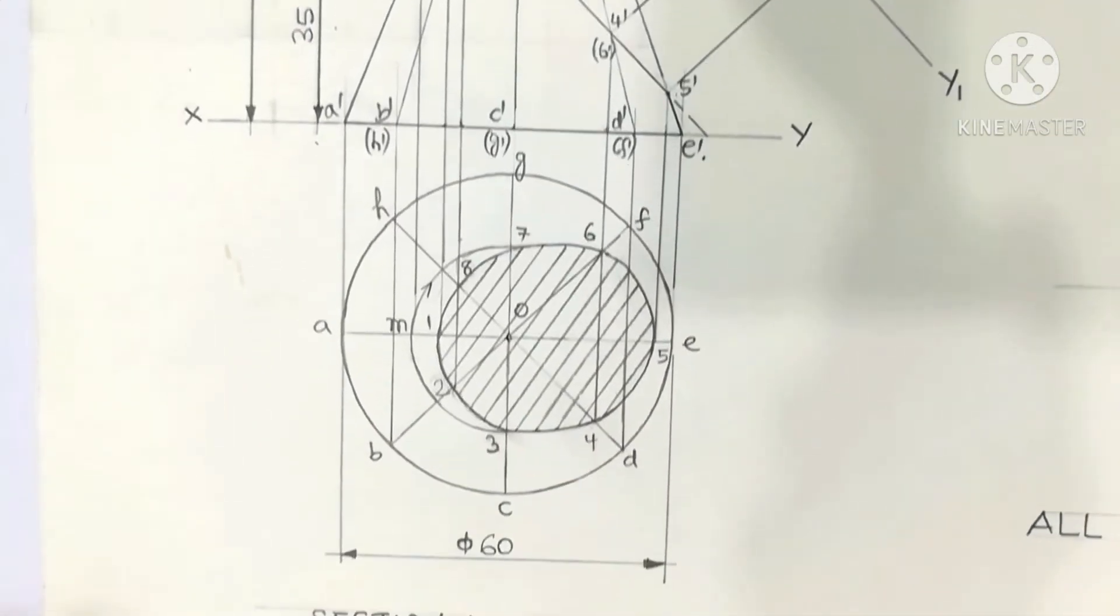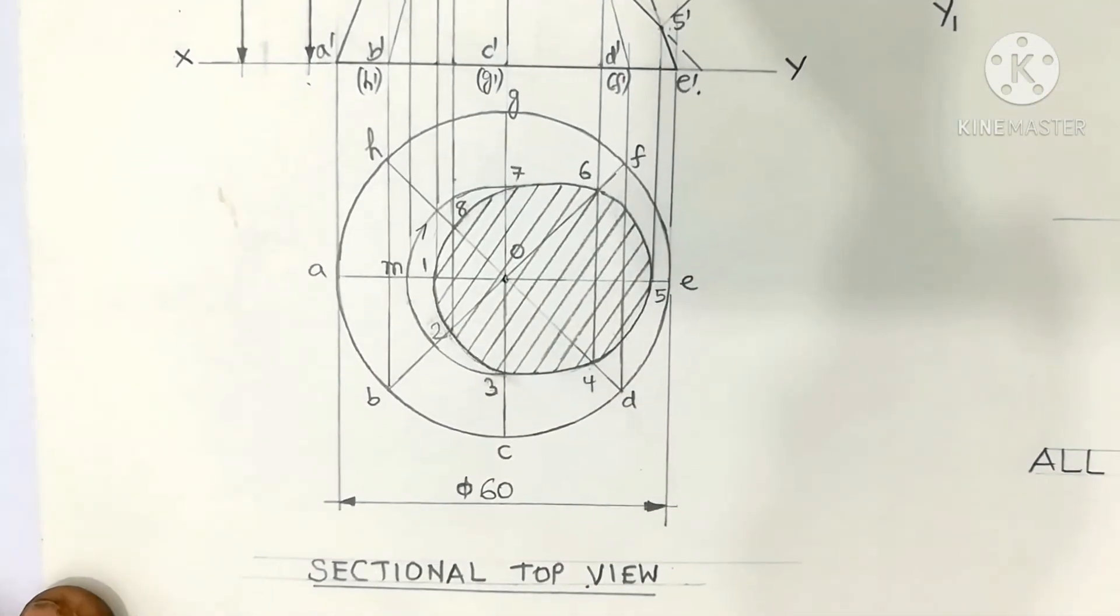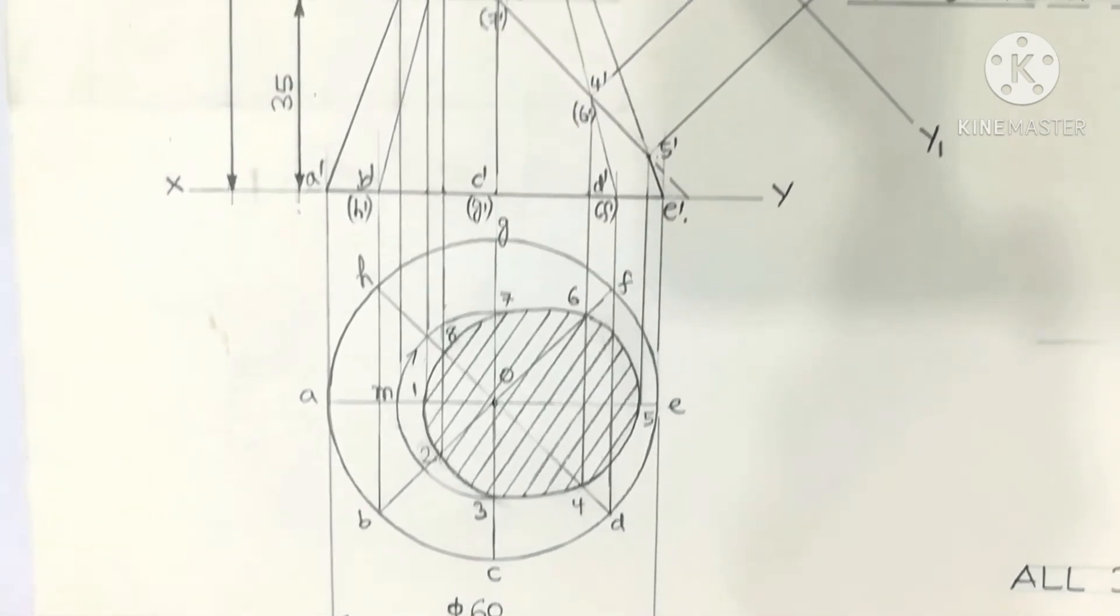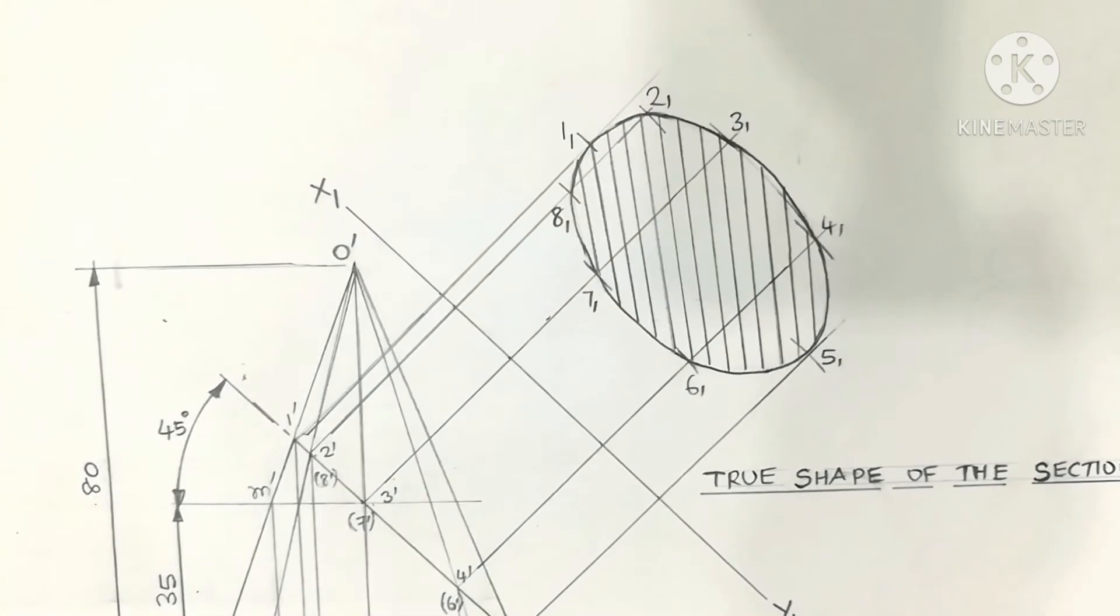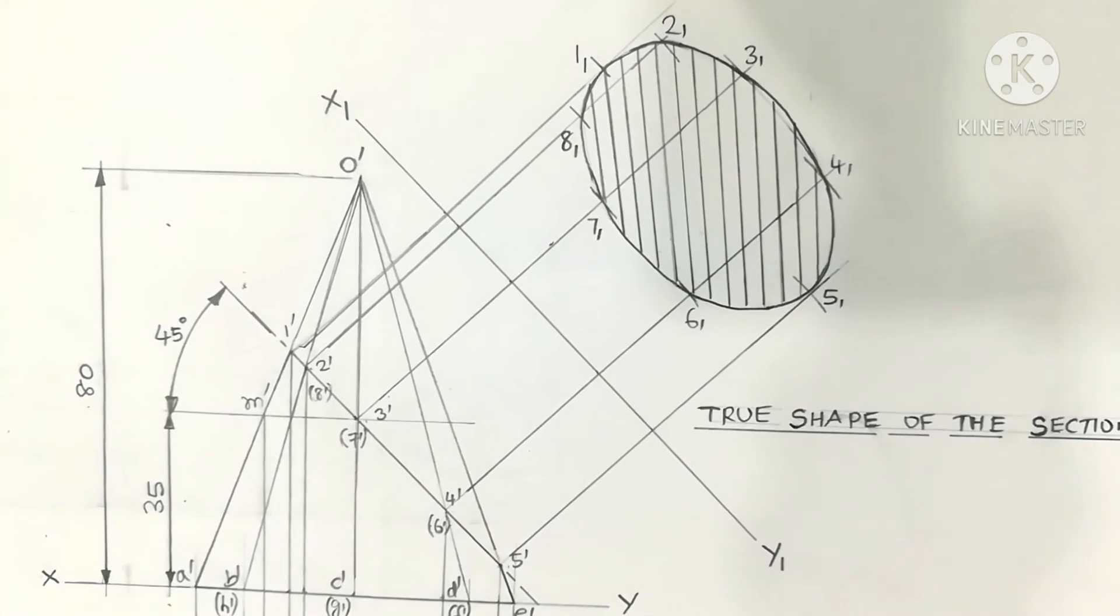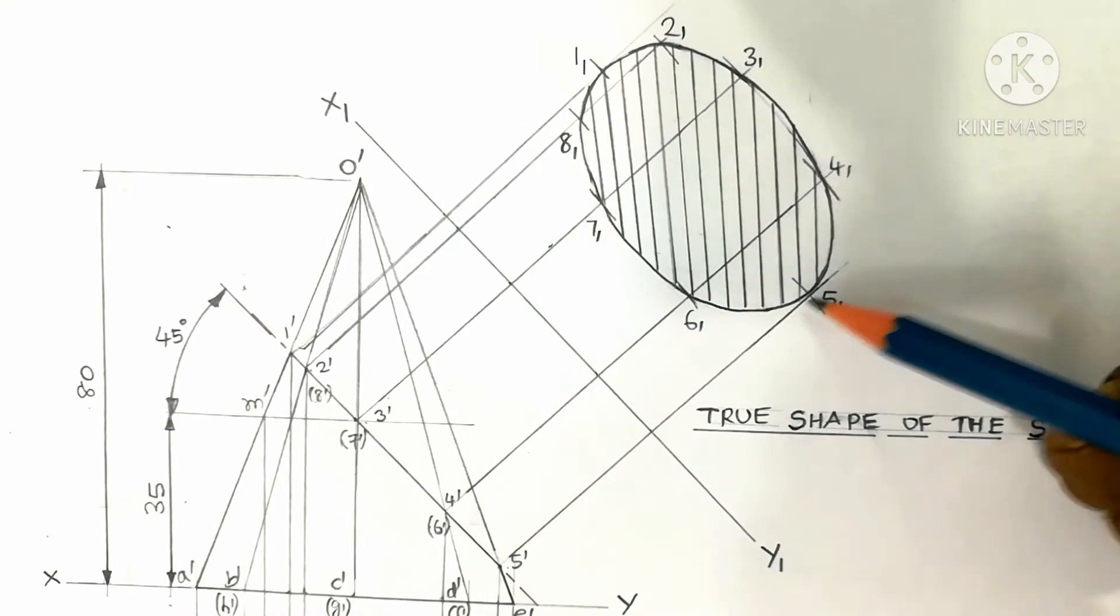This view is called the sectional top view, shown below the XY line. Above the XY line is the front view, which is a triangle. This ellipse shown here is called the true shape of the section.